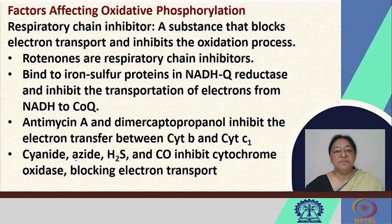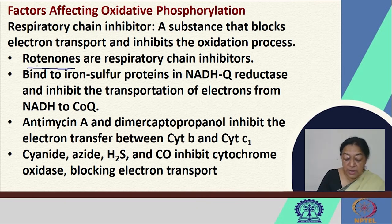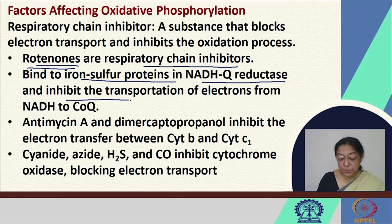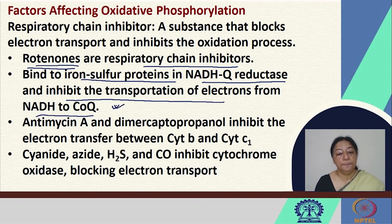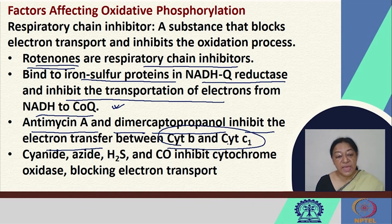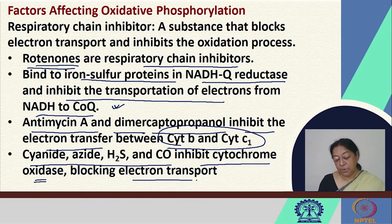Specific factors that affect oxidative phosphorylation include respiratory chain inhibitors — substances that can block electron transport and thereby inhibit the oxidation process. Rotenones are respiratory chain inhibitors that bind to iron-sulfur proteins in NADH-Q reductase and inhibit transportation of electrons from NADH to CoQ in complex 1. Antimycin A and dimercaptopropanol can inhibit electron transfer between cytochrome B and cytochrome C1, affecting complexes 3 and 4. Other small molecules can inhibit cytochrome oxidase, thus blocking electron transport.